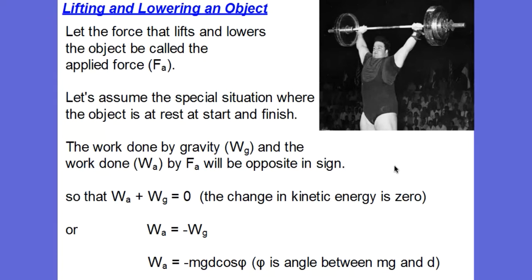And on the way back down, gravity is downward. The displacement of the barbell is downward. So on the way down, gravity does positive work. But as I lower it back to the ground, I'm pushing up on the bar and the displacement is down. So my work on the way down is negative. In other words, the two will always be opposite in sign.